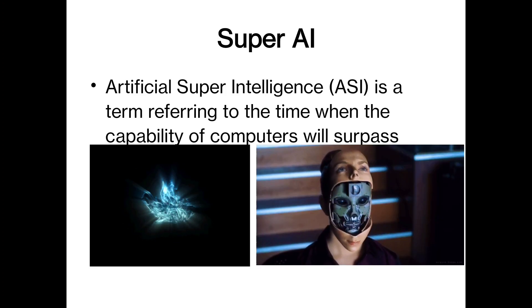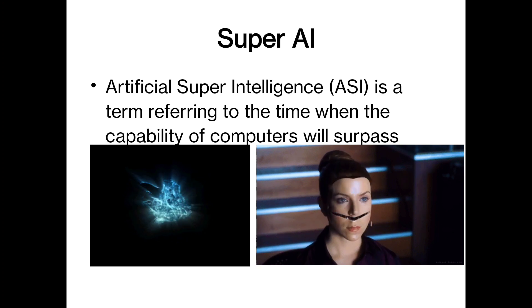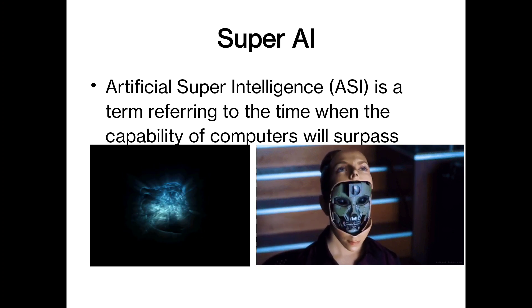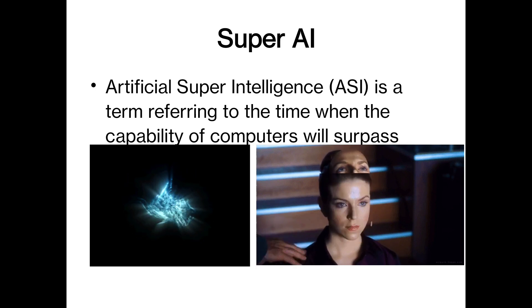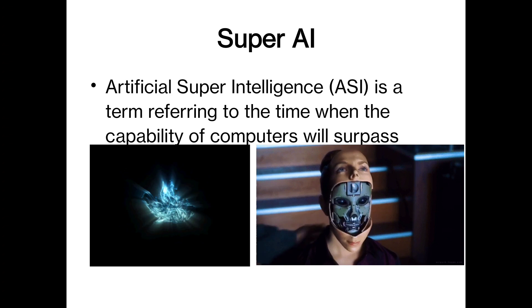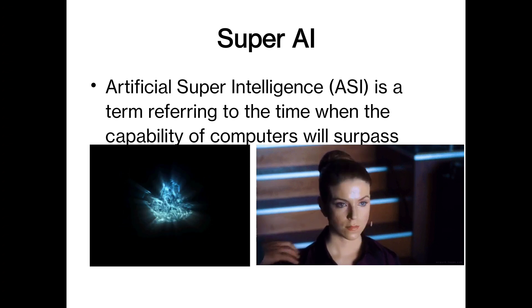The next type is artificial super AI. Artificial super intelligence is a term referring to the time when capabilities of computer will surpass. It is used in cinema industries.